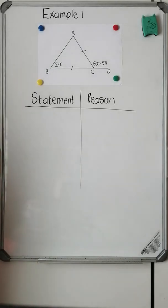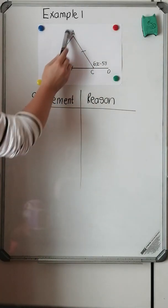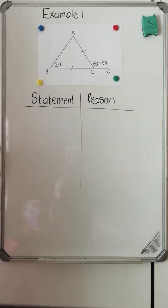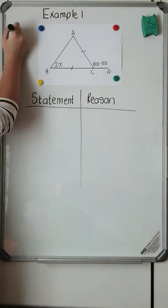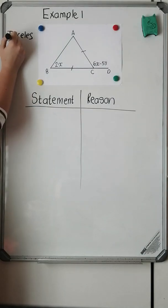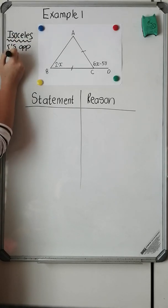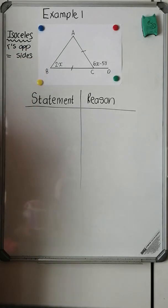So this is our first example. I notice a triangle, and it's a special kind of triangle because it's got these two lines that indicate that it's an isosceles triangle. Remember when we do an isosceles triangle, we can't write isosceles for our reason. Rather, our reason when we see an isosceles triangle is the angles that are opposite equal sides. That is your accepted reason.